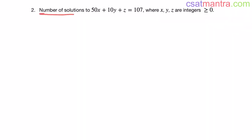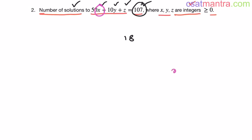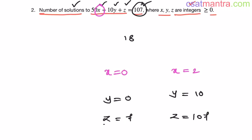Now, answer this: the number of solutions to 50x + 10y + z = 107, where x, y, z are non-negative integers (0 or greater). The answer is the same — 18 solutions. Here x, y, and z are the number of 50-rupee, 10-rupee, and 1-rupee coins needed to make 107. Maximum value of x is 2, minimum is 0. Maximum value of y is 10, minimum is 0. Maximum value of z is 107, minimum is 7.